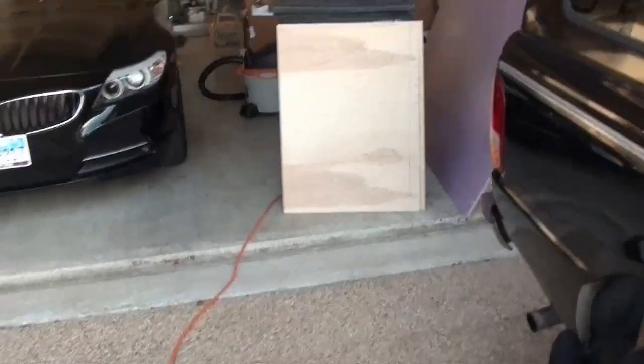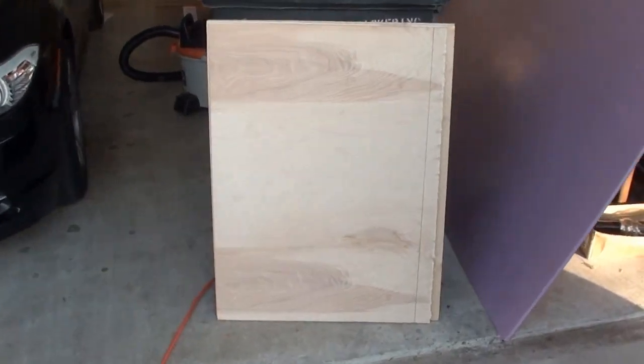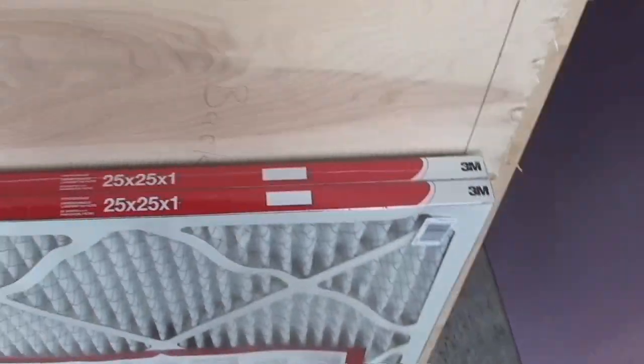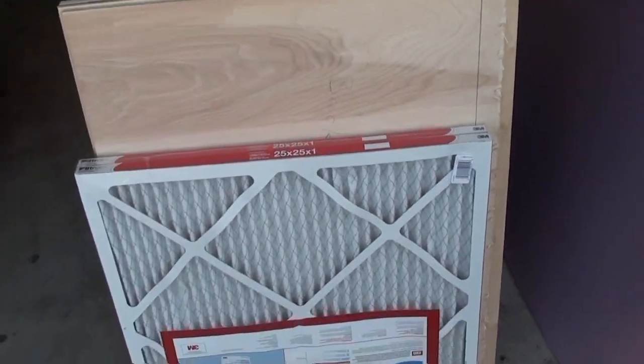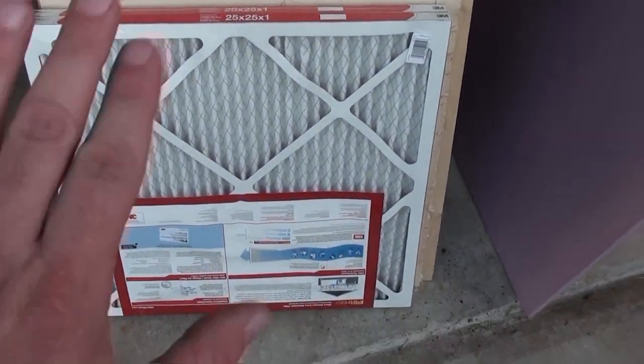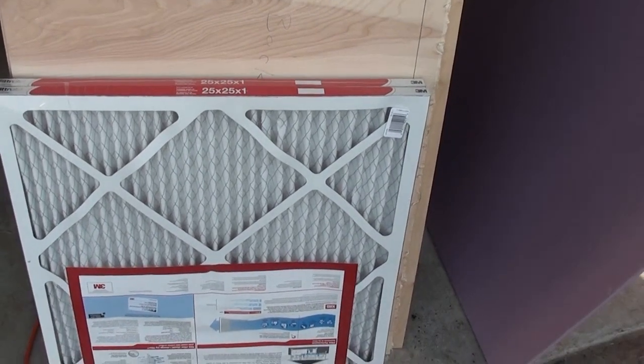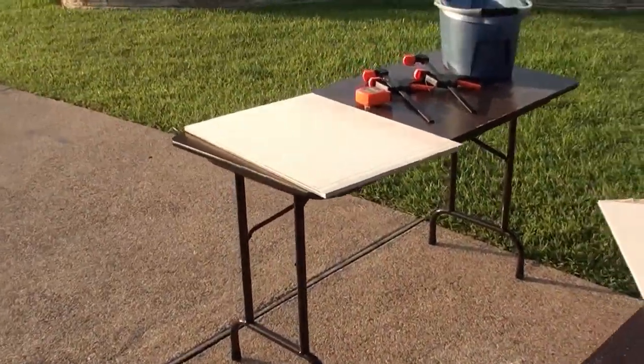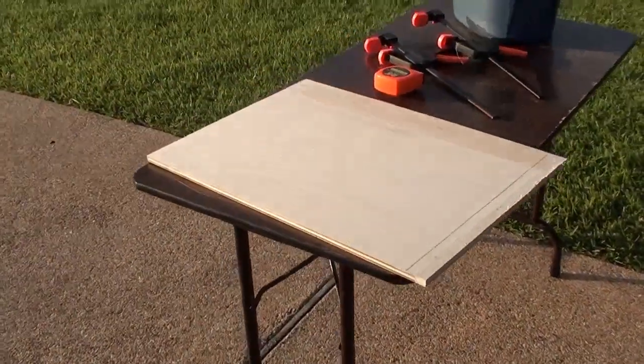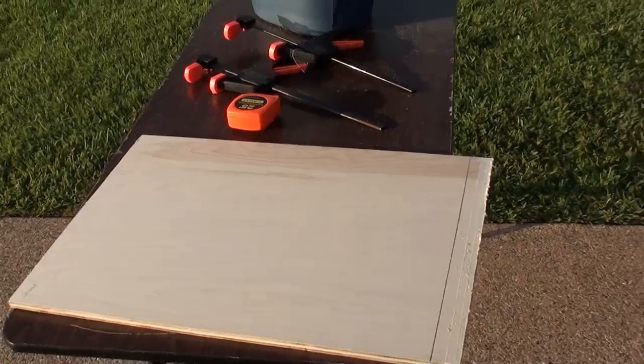My problem is I measured the width of the back to be exactly the width of the filter, so the front and back aren't the same width. I now have to go trim the front down to match the back or this thing will not be square when I put it together.